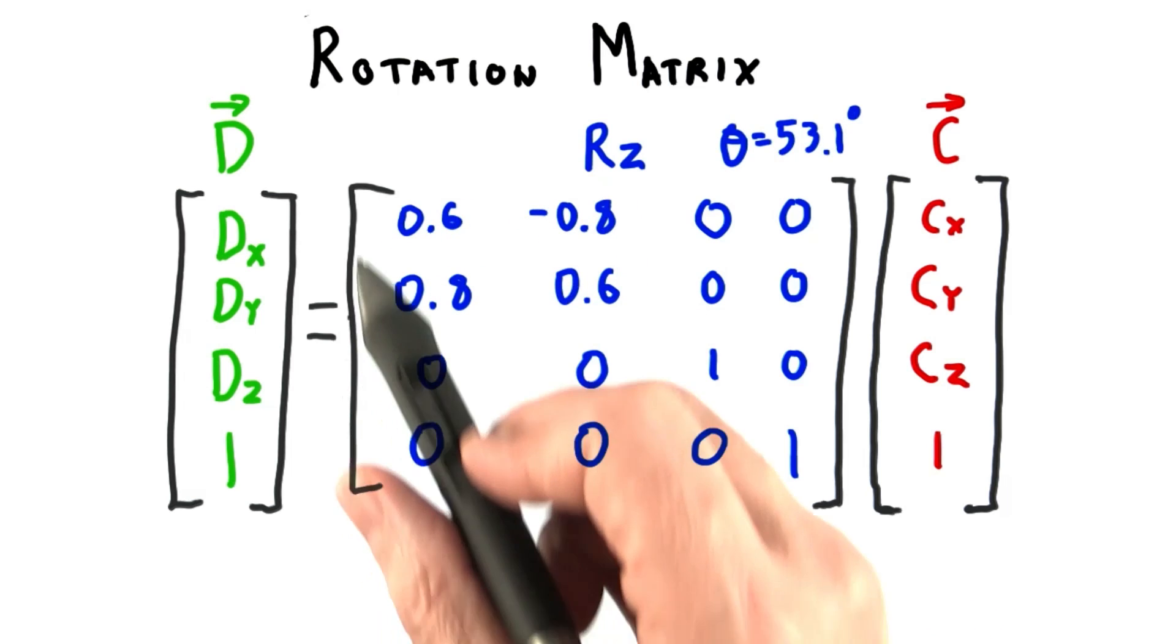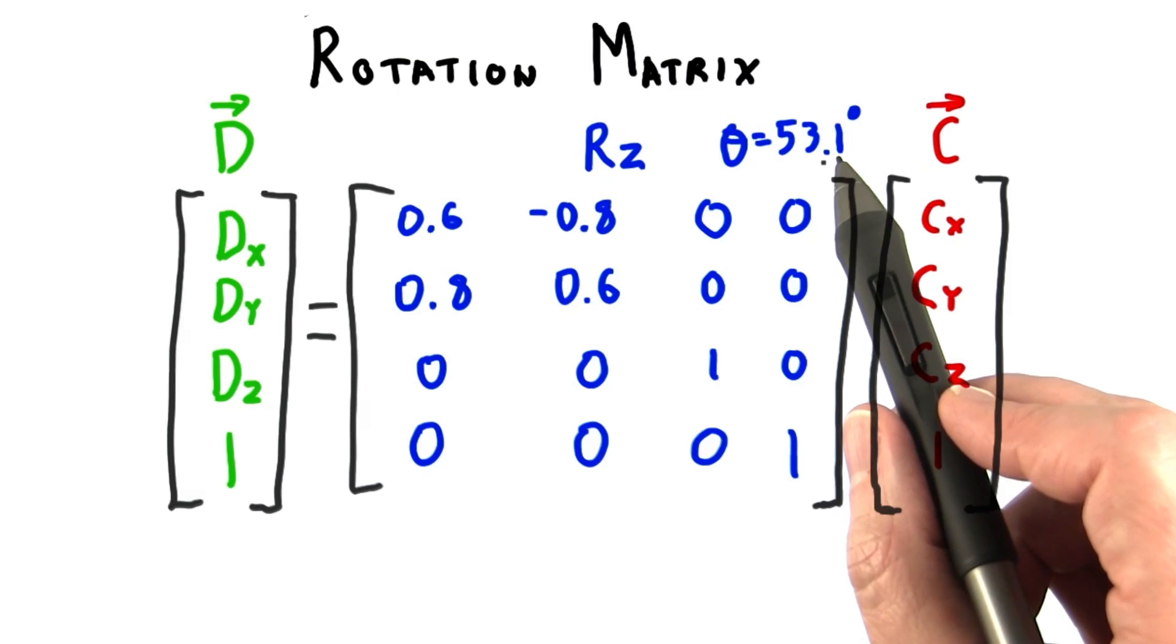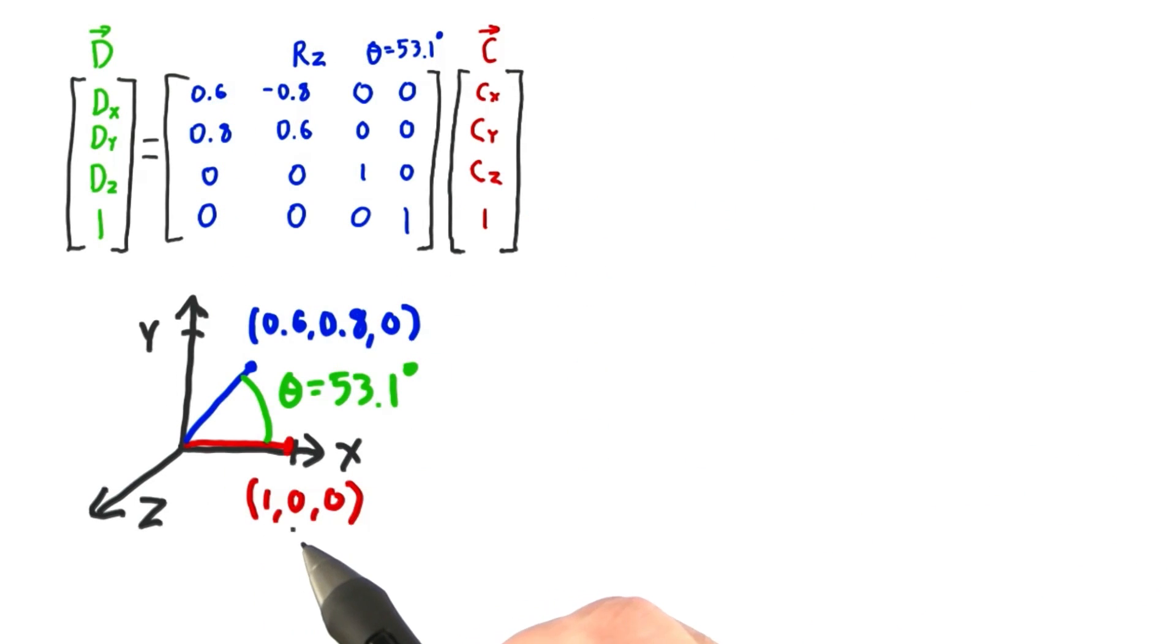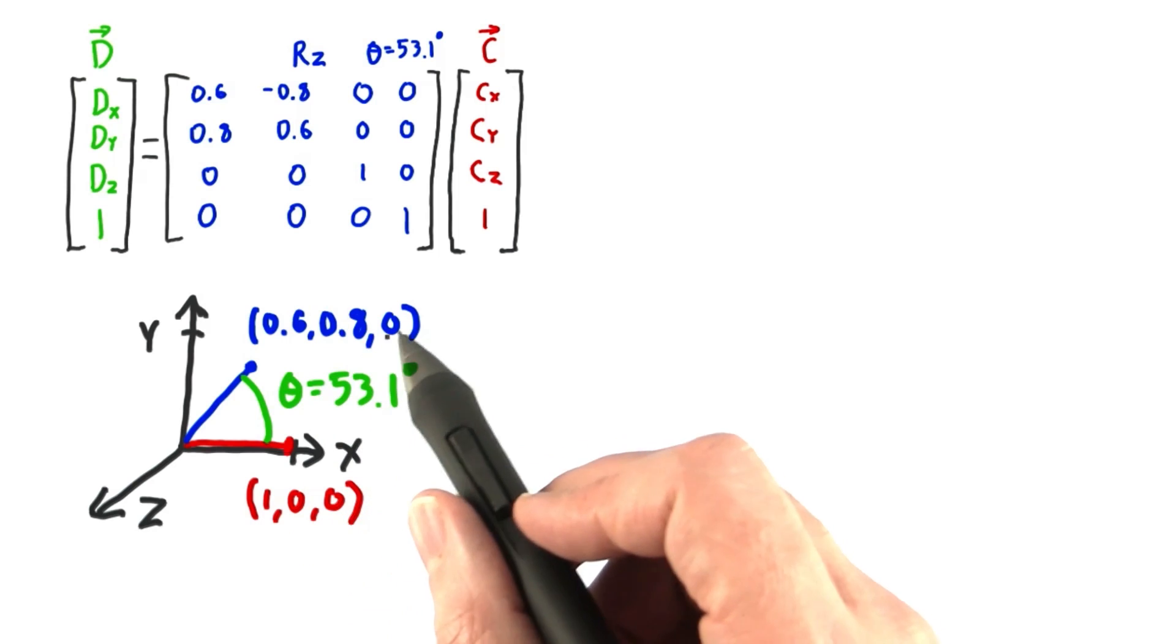Here's a real rotation matrix around the z axis for a rotation angle of 53.1 degrees. As an example, the coordinate 1, 0, 0 transforms to the coordinate 0.6, 0.8, 0.